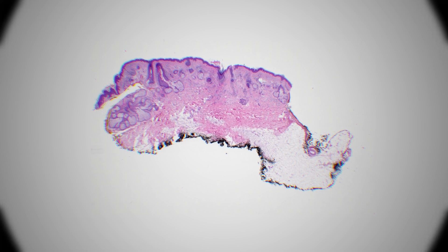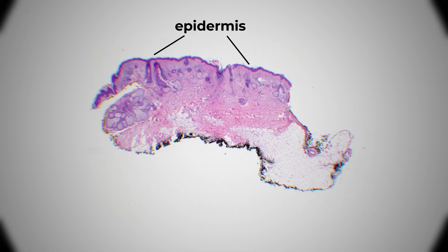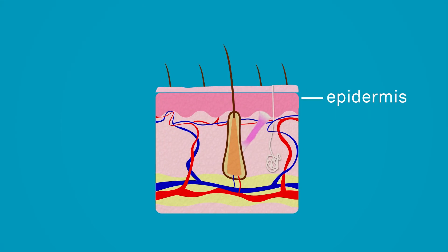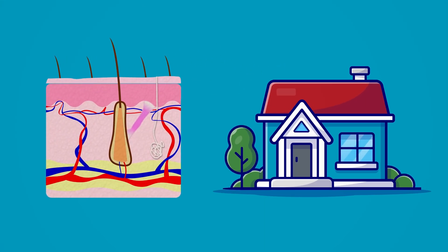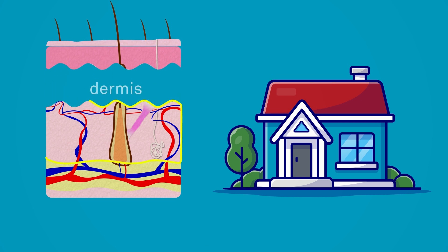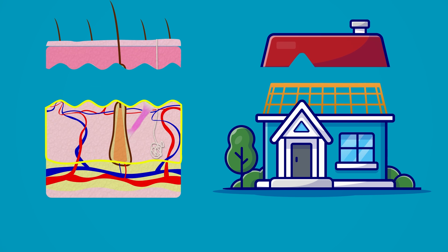The first thing we look at when we look at a skin biopsy is the epidermis. You can think of the skin in normal pathology like looking at a house. The epidermis in this case would be the roof — it's what keeps everything out of your house; it's the protective layer of the skin. Underneath that you have the dermis, which is the support structure for the epidermis, like the beams and the foundation of your house.